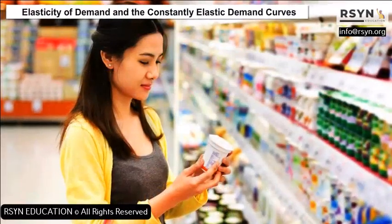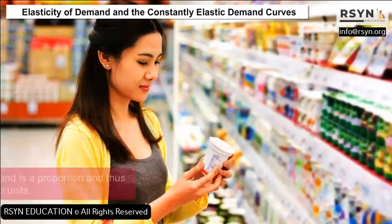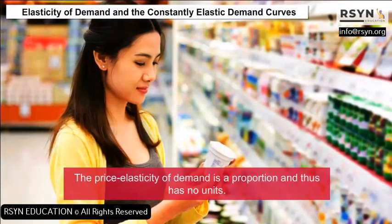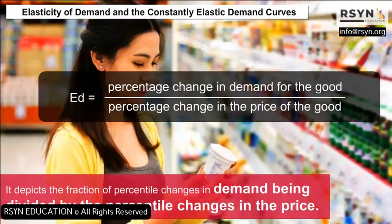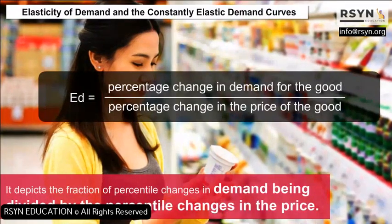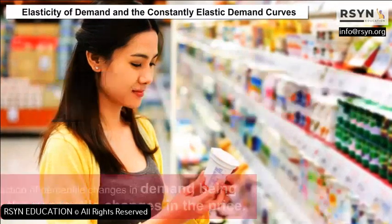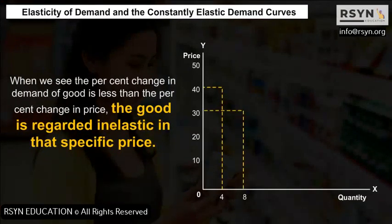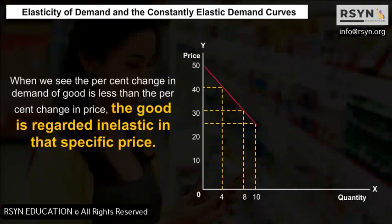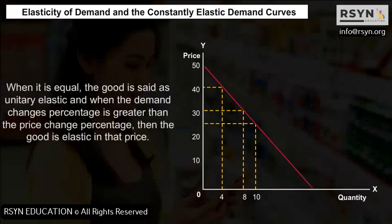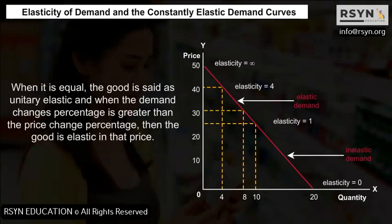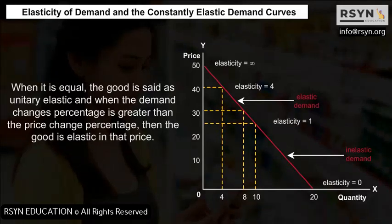Elasticity of Demand: The price elasticity of demand is a proportion and has no units. It depicts the percentage change in demand divided by the percentage change in price. When the percentage change in demand is less than the percentage change in price, the good is regarded as inelastic at that specific price. When it is equal, the good is unitary elastic. When the demand change percentage is greater than the price change percentage, the good is elastic at that price.